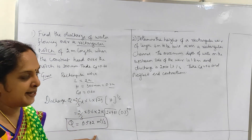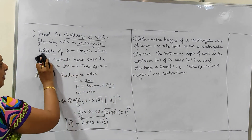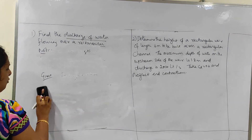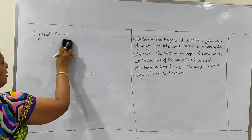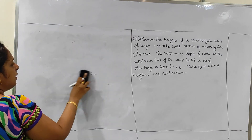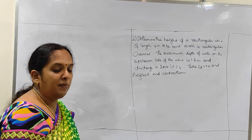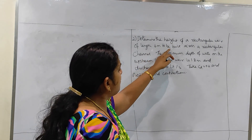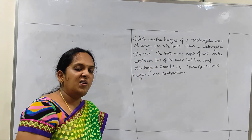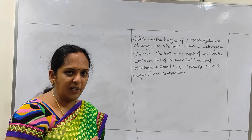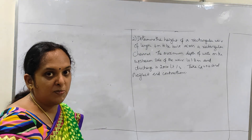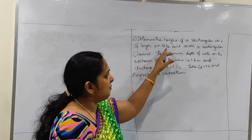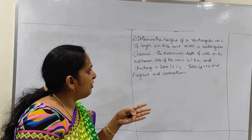Not all problems will be the same — small changes will be there from problem to problem, so always understand the problem first then try to do it. Problem 2: Determine the height of a rectangular weir of length 6 meters to be built across a rectangular channel. This is a weir, not a notch. Weir is made up of masonry structures, whereas notch is made up of metallic plates.